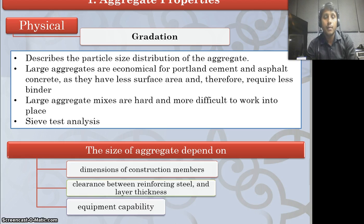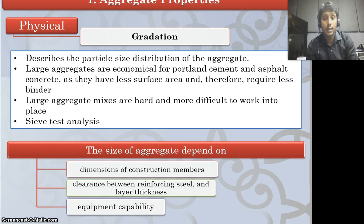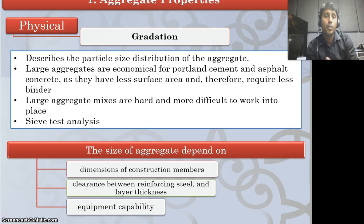Gradation can be determined using sieve test analysis, which you are going to perform in your further laboratory experiments. The size of aggregate depends on several factors for selection: dimensions of construction members, clearance between reinforcing steel and layer thickness — aggregate should not be larger than the gap between steel rods — and the equipment capability of the mixing equipment.